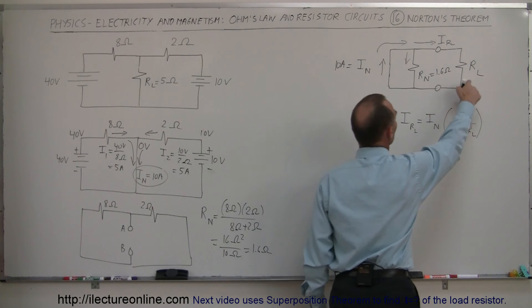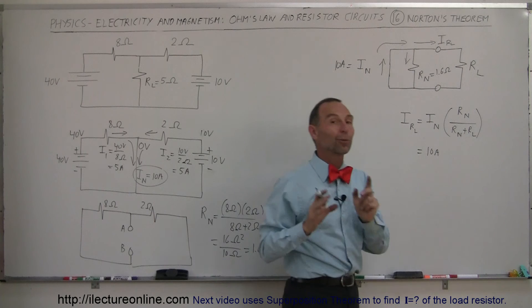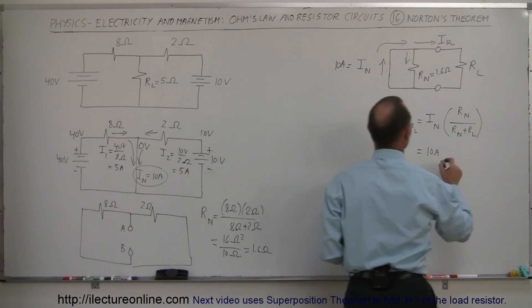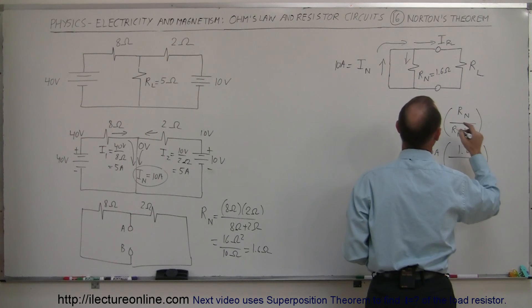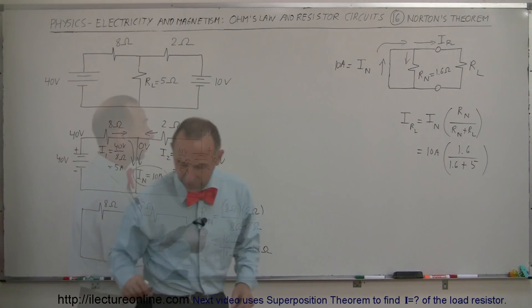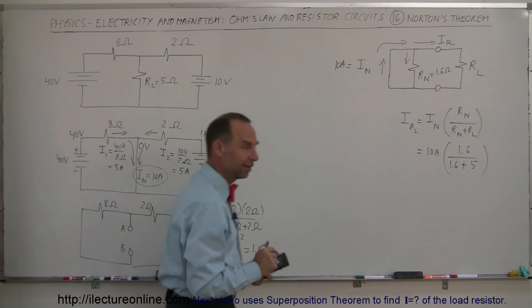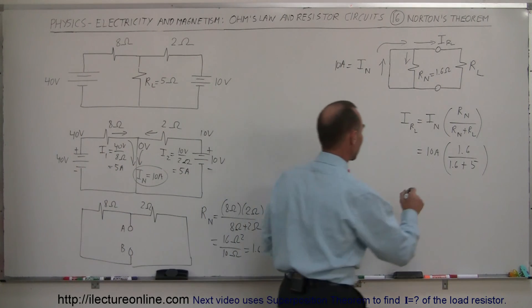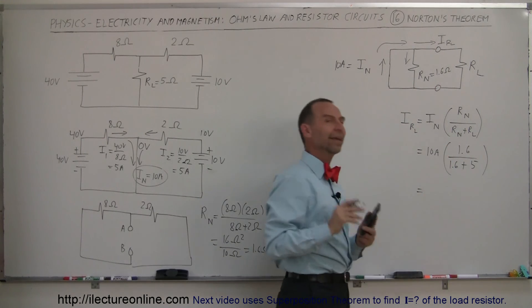And so now we can find the current through the load resistor, which is the total current in the circuit, which is 10 amps. That is the equivalent Norton circuit times the ratio of the Norton resistance, which is 1.6 divided by the Norton resistance, 1.6 plus 5 ohms for the load resistor. So let's see what that is equal to. So we have 10 times 1.6 divided by 6.6 equals. And we should have gotten the very same result because this was the very same circuit that I used for the Thevenin's theorem.